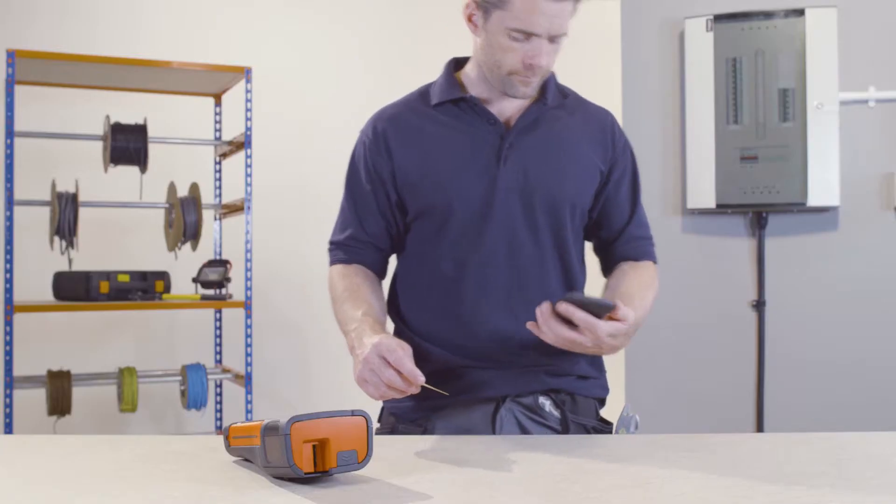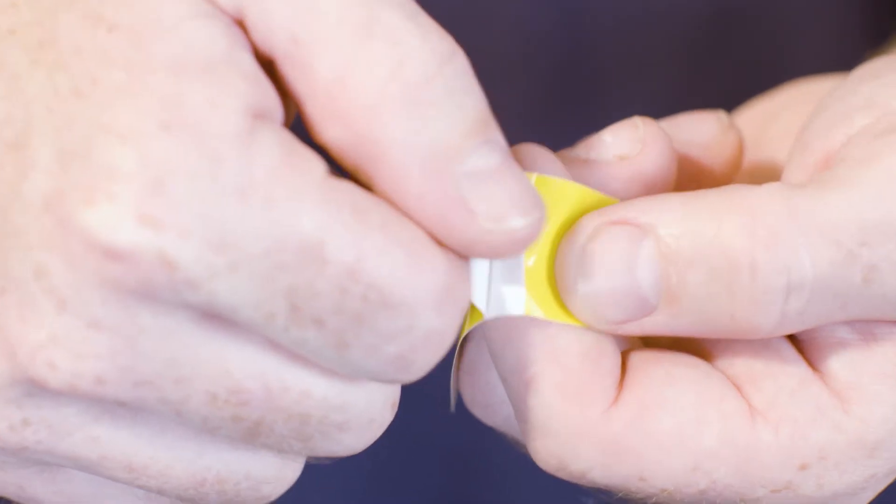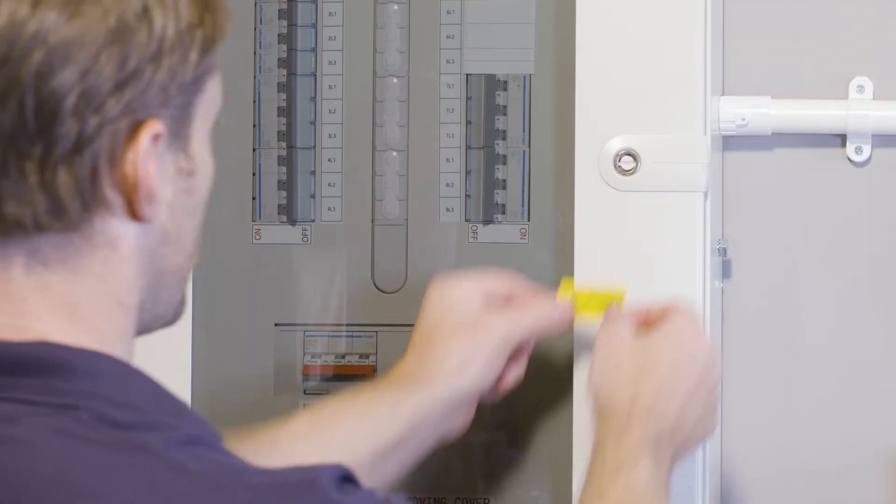Once printed, simply use the Easy Peel feature to apply the professional and compliant label to your equipment.